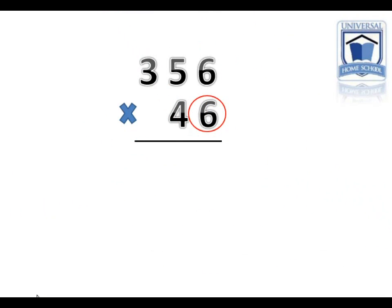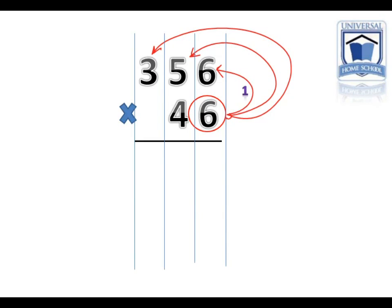We start off with a 6 in the ones column. 6 times 6, followed by 6 times 5, and then 6 times 3, in that order. Let's start off with step 1. We're going to put some columns in, so that we don't get confused.